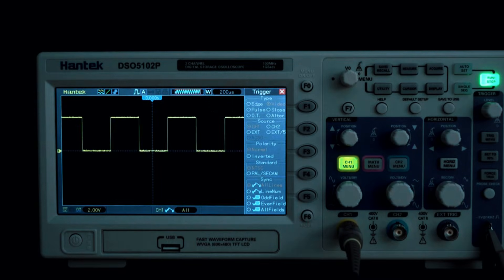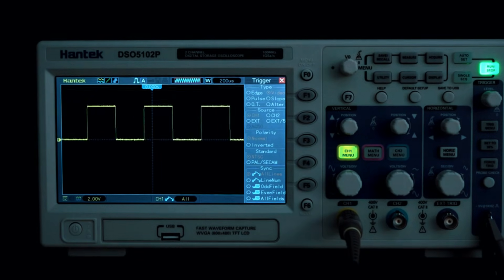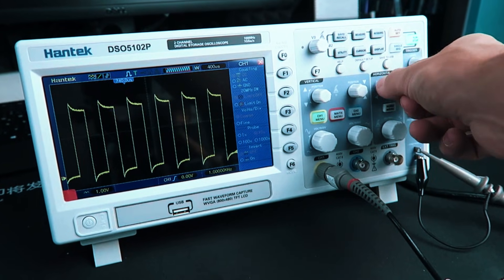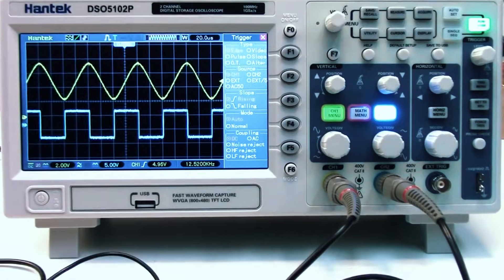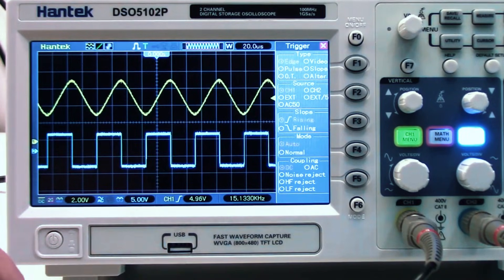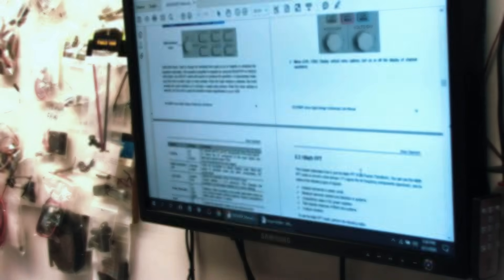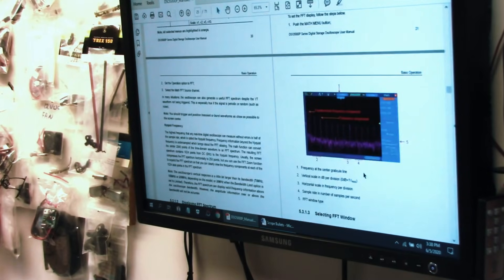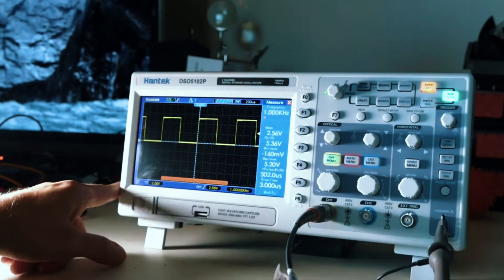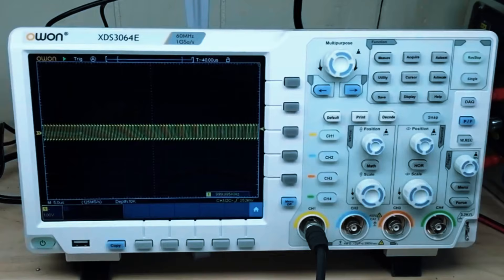It's a great step up from entry-level scopes and provides a professional experience without the premium price tag. If you're an engineering student, tech enthusiast, or entry-level professional, the Hantec DSO5102P is an excellent choice. It delivers a strong set of features, making it ideal for learning advanced electronics, debugging circuits, and analyzing signals without draining your wallet. Whether you're working on DIY projects, lab experiments, or real-world engineering tasks, this oscilloscope provides great value for its price.